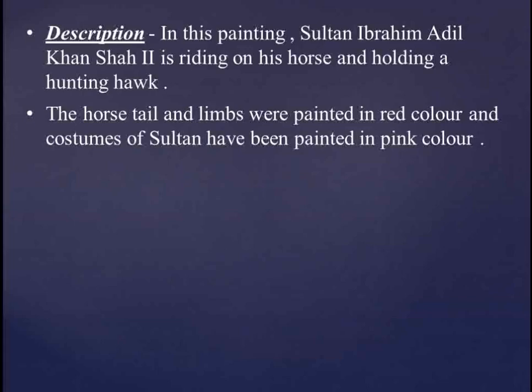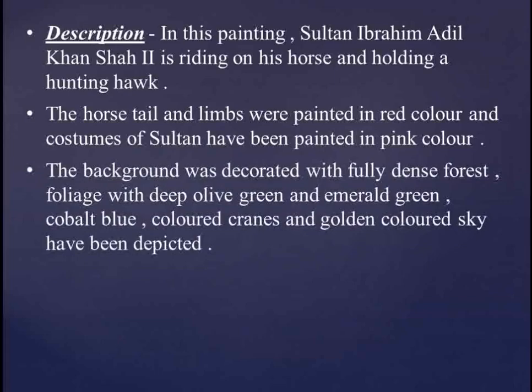The horse's limbs and tail have been painted in red, and the costume of the Sultan has been painted in pink. In the background, a fully dense forest has been depicted with deep olive green, emerald green, cobalt blue colored foliage, and a golden colored sky.